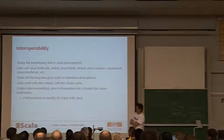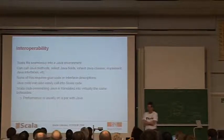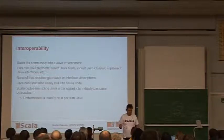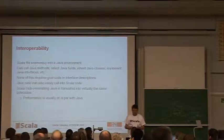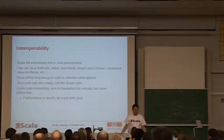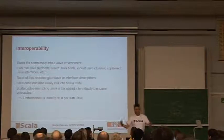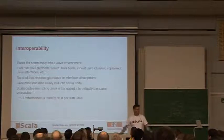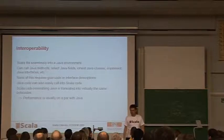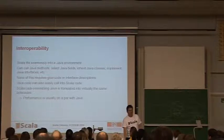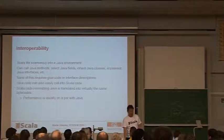So to look at interoperability, the whole thing fits seamlessly into a Java environment. You can call Java methods, select Java fields, inherit Java classes, implement interfaces, and so on. There's virtually nothing that doesn't work completely without any protocol. So you don't need any glue code, interface description, nothing. In the end, a Scala program or Scala application is just another Java library. It compiles into class files. It gets deployed as JARs. And at runtime, there's virtually no difference between the two. And for that reason, it's also the case that the performance is usually on a par with Java.